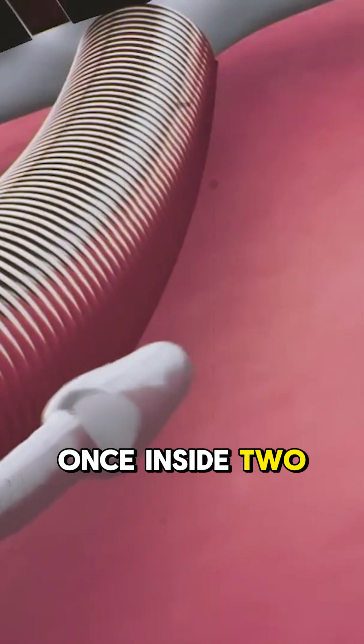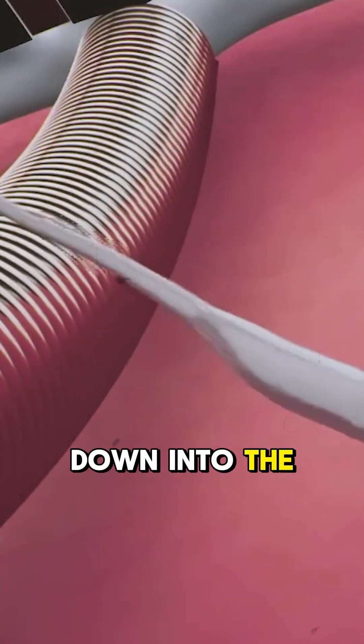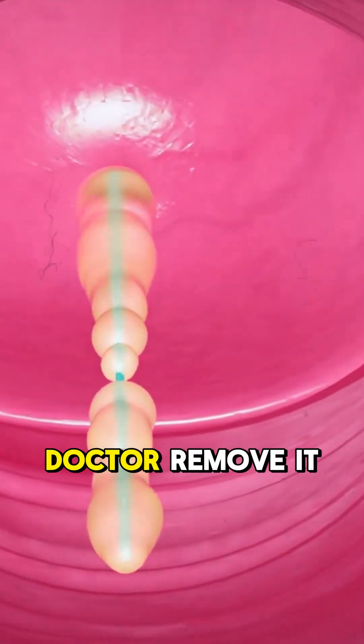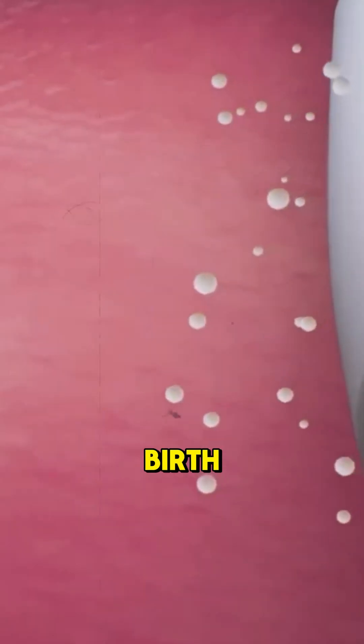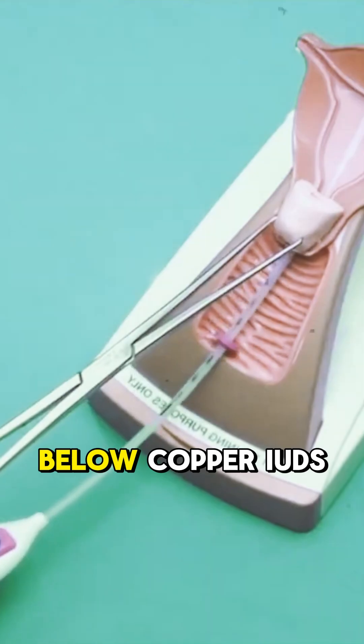Once inside, two small strings hang down into the cervix. These help the doctor remove it later when needed. Would you consider using an IUD for long-term birth control? Let me know below.